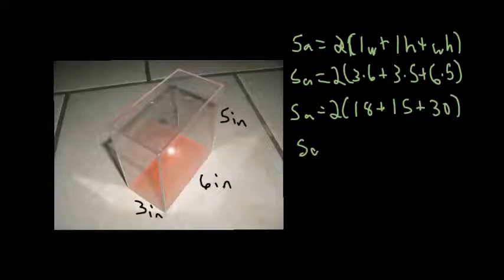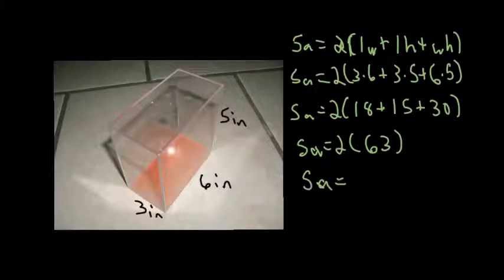So my surface area equals 2 times, 15 plus 18 would be 33, 33 plus 30 would be 63. So now I need to do 2 times 63, so surface area equals 2 times 3 is 6, 2 times 6 is 12, so that would be 126 inches squared.